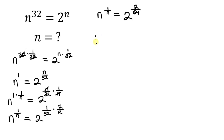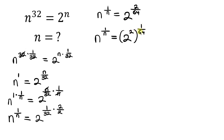This becomes n to the 1 over n equal to... Now, this can be written as 2 squared, raised to the power of 1 over 64. The reason for this is, from indices, powers multiply. So when I multiply 2 times 1 over 64, I still get 2 over 64. Our next step will be to simplify what we have inside these brackets. We have n to the 1 over n equal to 2 squared, which is 4, raised to the 1 over 64.